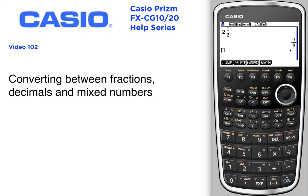Notice your answer comes up as an improper fraction. If you want to convert that improper fraction to a decimal, use the FD — form to decimal — key right above the number eight. That'll convert it to a decimal. Press it again and it changes it back.